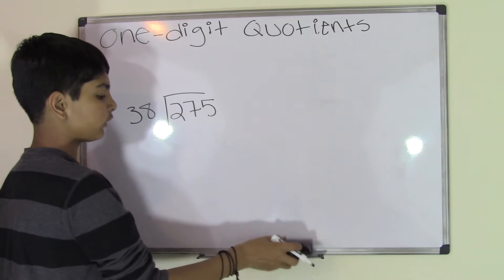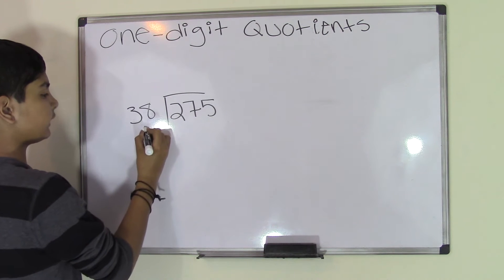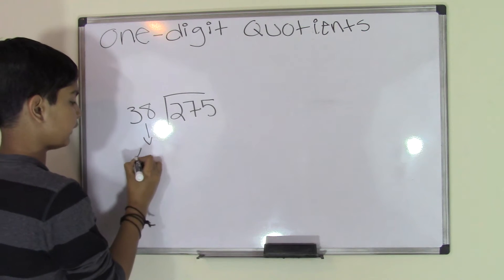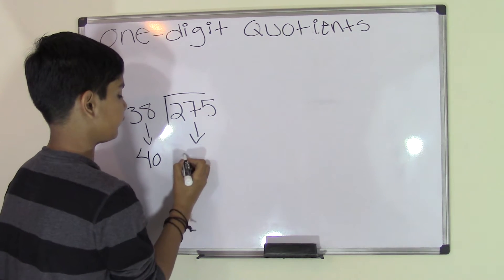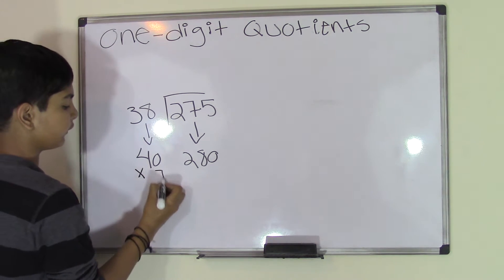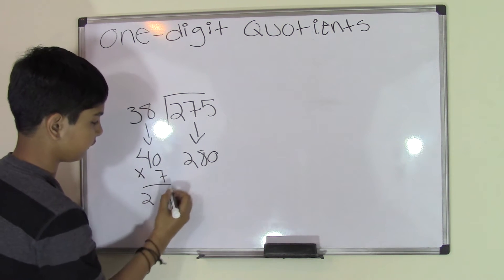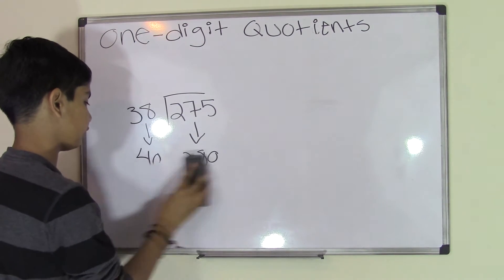But what is the closest number? That's why we use estimation. So let's round the 38 to 40, let's round the 275 to 280, and we automatically know that 40 times 7 is 280. So our first number is 7.